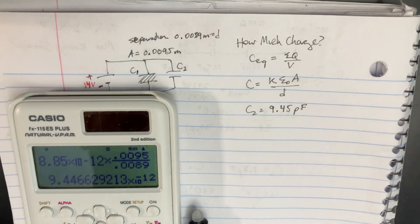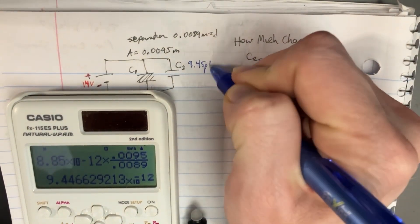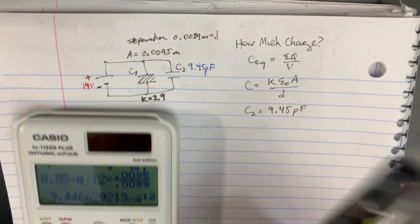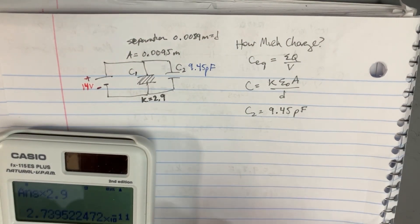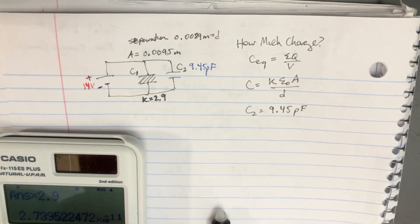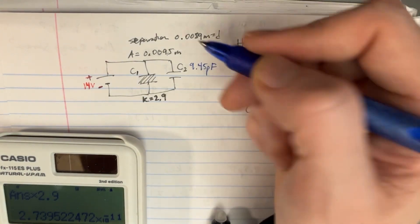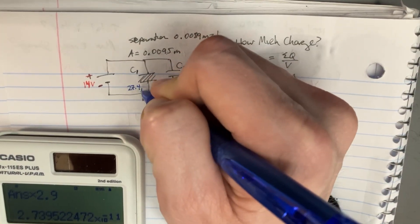Okay, so that's for C2, 9.45 picofarads. All right, now for C1, we can just multiply that by 2.9, and we're going to get 27.4 picofarads.